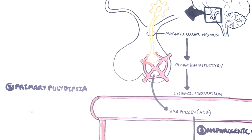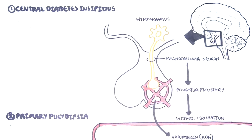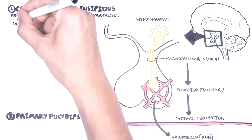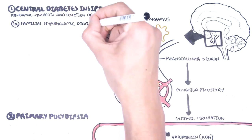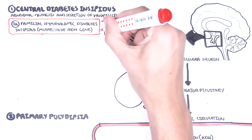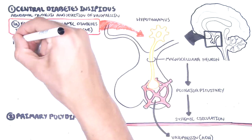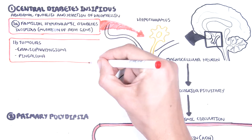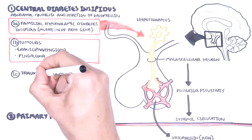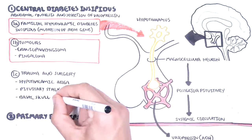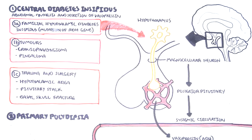Central diabetes insipidus is where you have abnormal synthesis and secretion of vasopressin. Examples include familial hypothalamic diabetes insipidus, due to an inherited mutation of the arginine vasopressin neurophysin 2 gene, inherited in an autosomal dominant manner. Tumors such as craniopharyngioma and pineal gland tumors, which occur mainly in children, are another important cause. Trauma and surgery around the hypothalamic area or the pituitary stalk, as well as basal skull fractures, can also cause central diabetes insipidus.